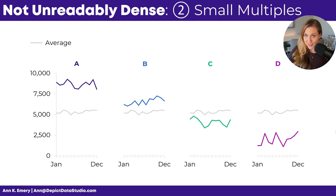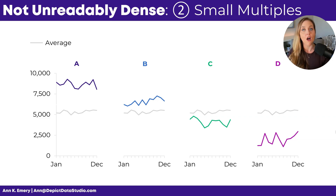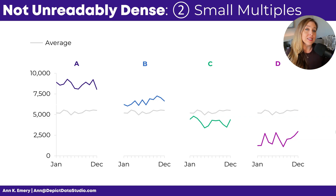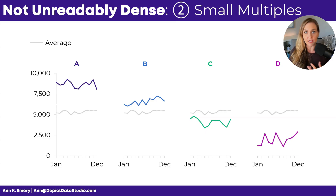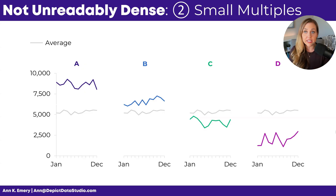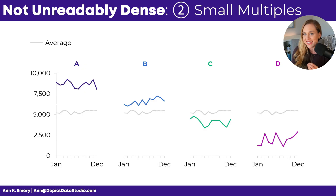Fix number two is small multiples — multiple small charts, all arranged on the screen with the same height, width, and proportions, and typically the same scales, so that you can make accurate comparisons across different graphs. In this case, you might leave the average line on each of the graphs and then just show line A on A's graph, line B on B's graph, and so on.